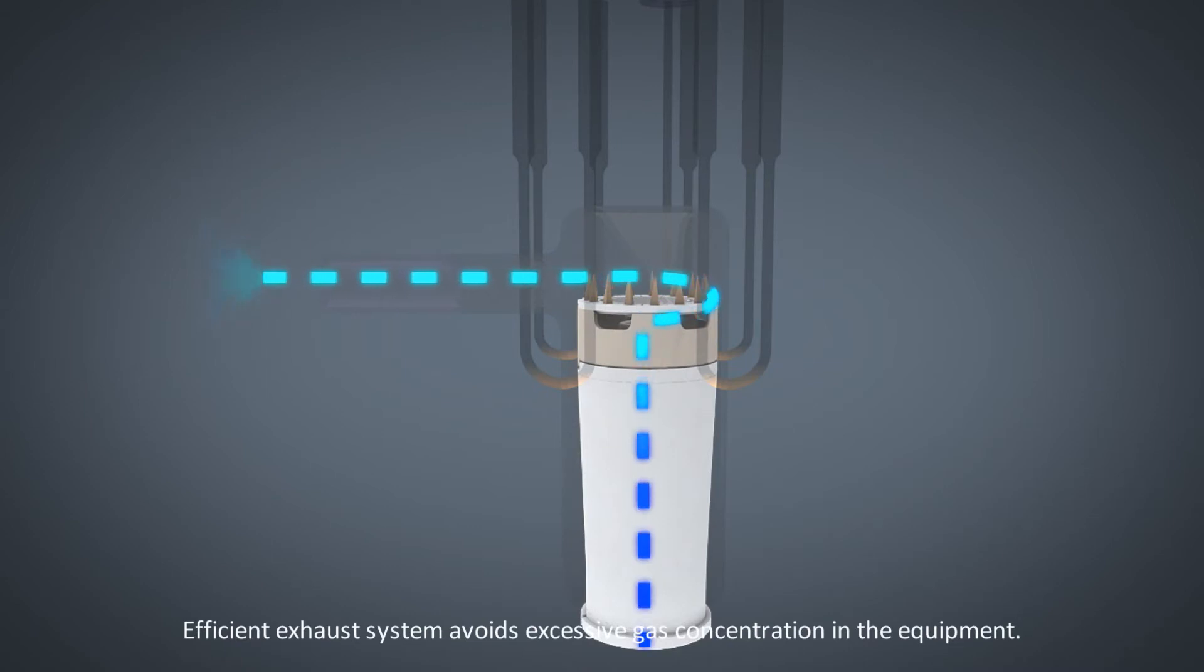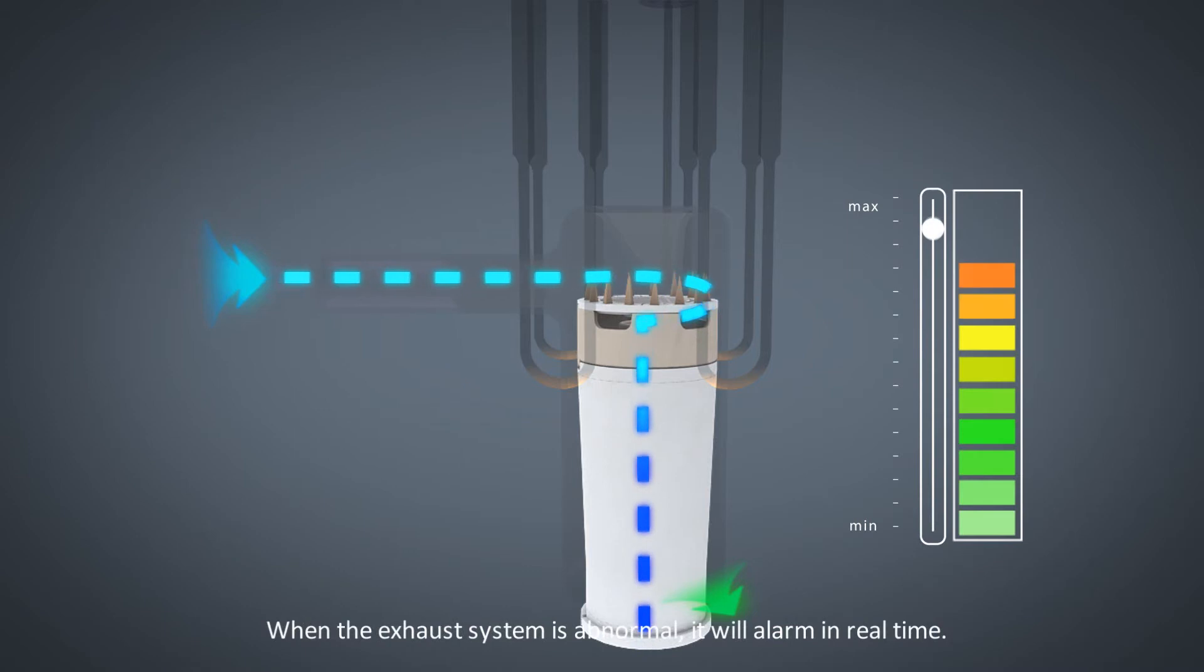Second, an efficient exhaust system avoids excessive gas concentration in the equipment. When the exhaust system is abnormal, it will alarm in real time.